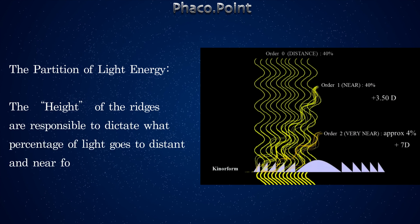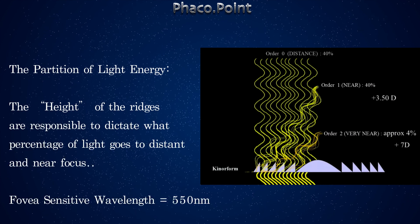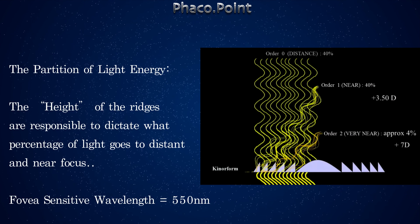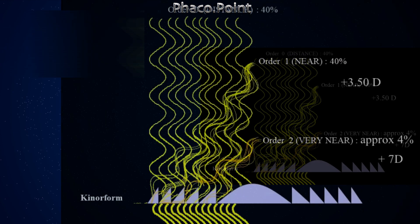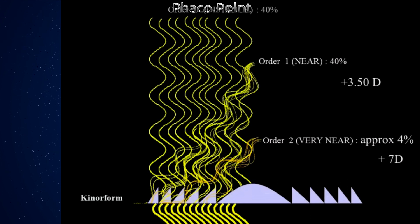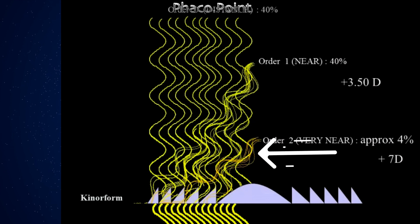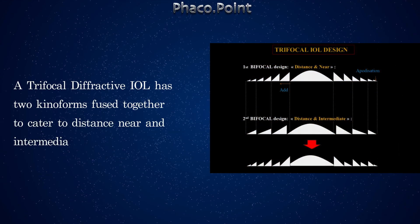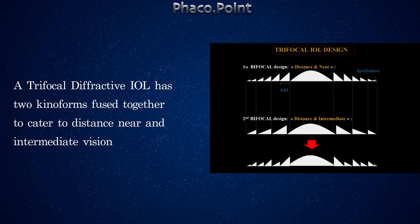The partition of light to go to the distance or near focus depends on the height of the diffractive ridges, governed by the fovea-sensitive wavelength of light, which is about 550 nanometers. If the height of the ridges is set at half the wavelength of light, then the zero order rays — 40% — go undeviated to the distant focus. The first order rays are 40% and go to the near focus, while the second order rays, which are 4%, focus too close to be useful, and the remaining 16% of light energy is simply lost as scatter.